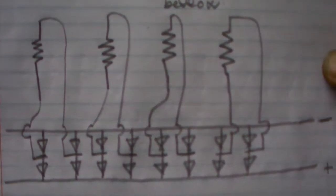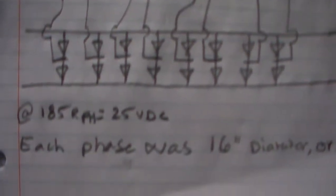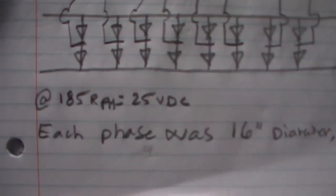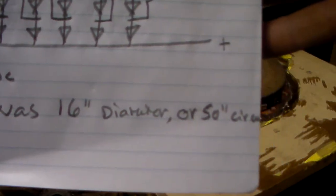At 120 to 185 RPM I get 25 volts DC. Each phase was made out of 16 inch diameter circles.